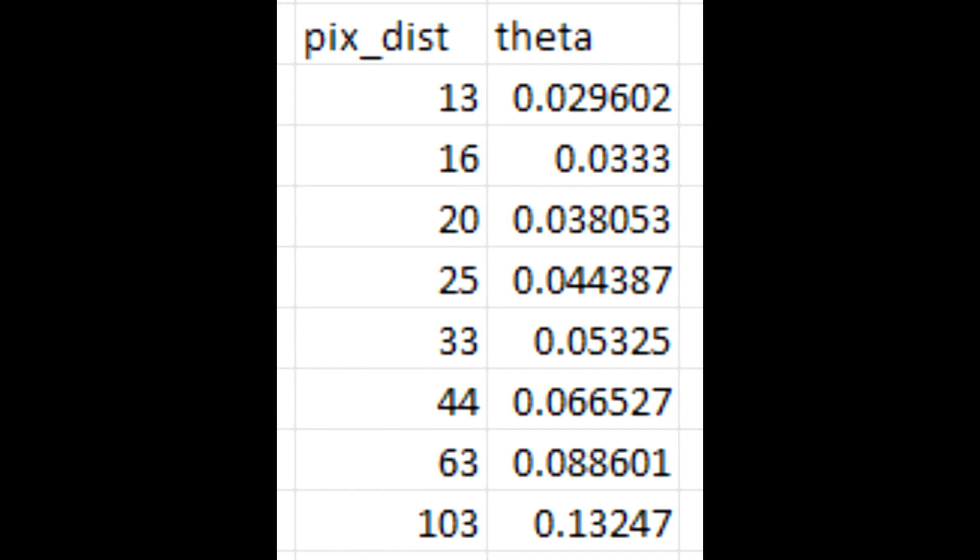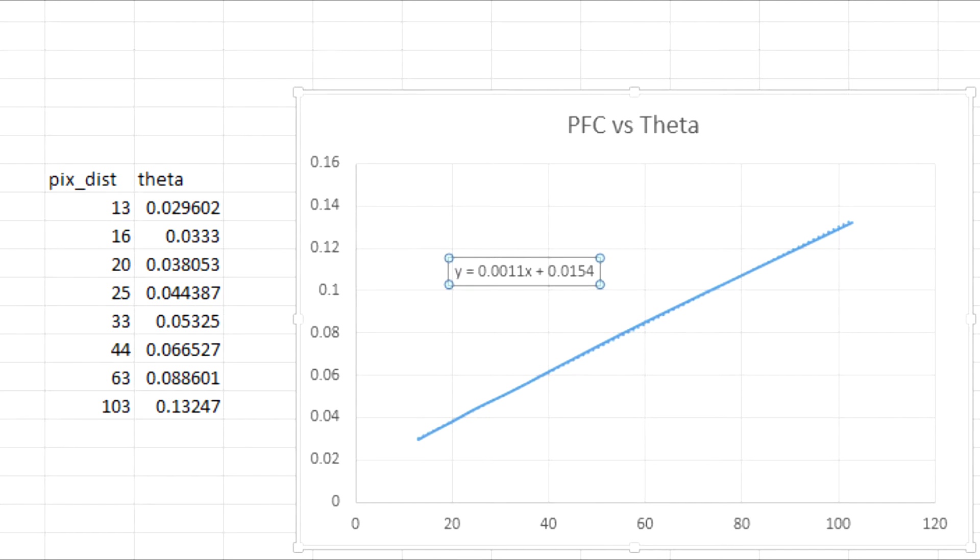So you just highlight both cells, click insert, throw in a graph, and we see we get this lovely straight line. And it's always great when you graph two things you measured and get a roughly straight line - that means you know you didn't mess up too badly.